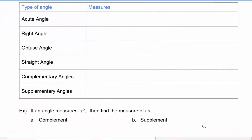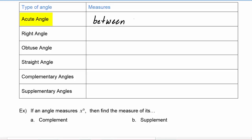Next we're going to go over the different types of angles. Back in geometry class, you probably defined an acute angle as an angle whose measure was less than 90 degrees. In trigonometry that definition is not sufficient because we can have negative angle measures, so we define an acute angle as an angle whose measure is between 0 and 90 degrees.